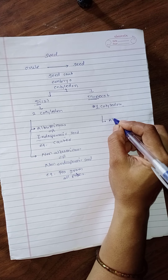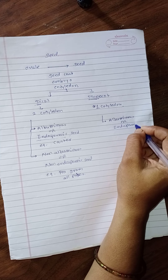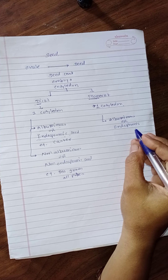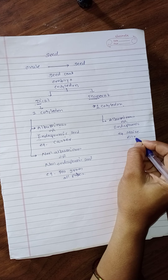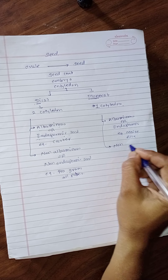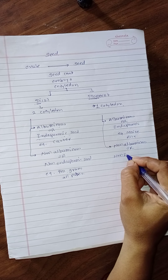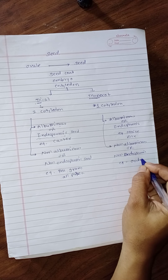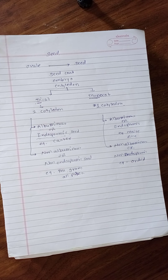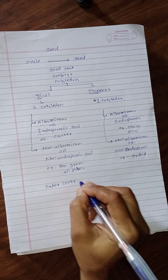Albuminous or endospermic monocot seeds — examples are maize, rice, etc. The other type is non-albuminous or non-endospermic monocot seed — example is orchid. That means in endospermic monocot the endosperm is completely used.